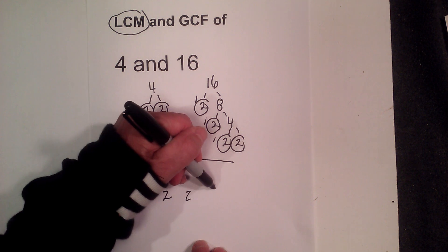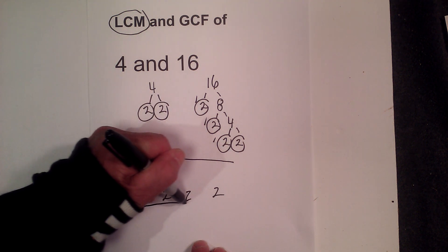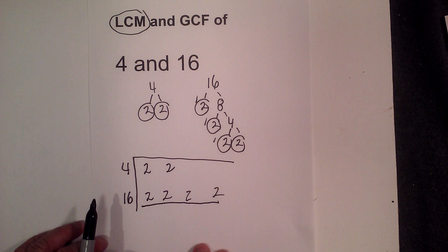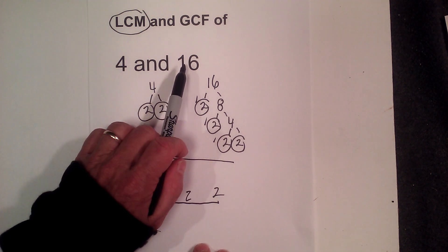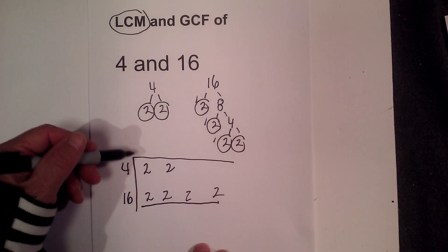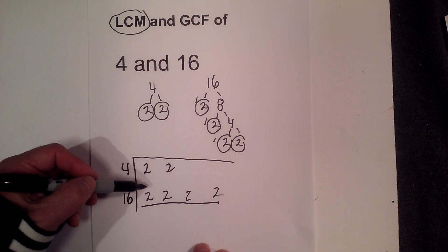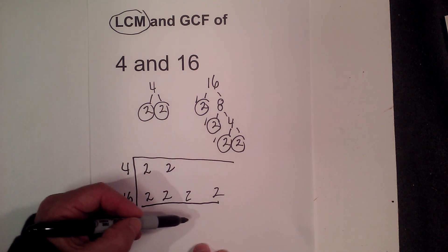Now to find the LCM, remember it's the lowest common multiple. So as a minimum it's got to be 16 or greater. You just bring down, you basically multiply all the factors together.